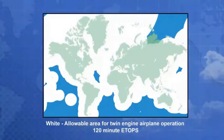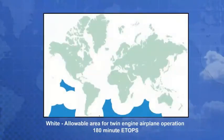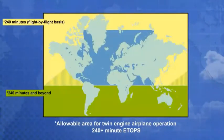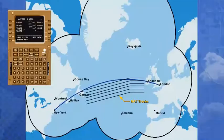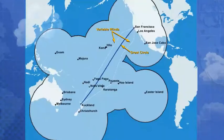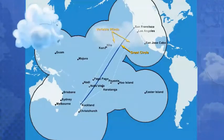However, if an operator meets ETOPS requirements, they may fly in areas that are 120 minutes, 180 minutes, or 240 minutes and beyond from an adequate airport. ETOPS not only provides for more direct routing, it allows for route flexibility in areas with unique navigational requirements such as the North Atlantic track system and in variable seasonal wind conditions.